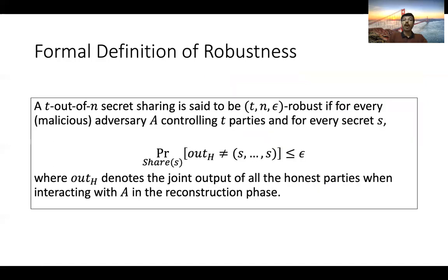The more formal definition of robustness is as follows. A T-out-of-N secret sharing scheme is said to be (T, N, epsilon)-robust if for every malicious adversary A controlling up to T parties and for every secret S, the probability that there is an honest party that outputs something different from S while interacting with A in the reconstruction phase is upper bounded by epsilon. One can think of epsilon as the error parameter for robustness.